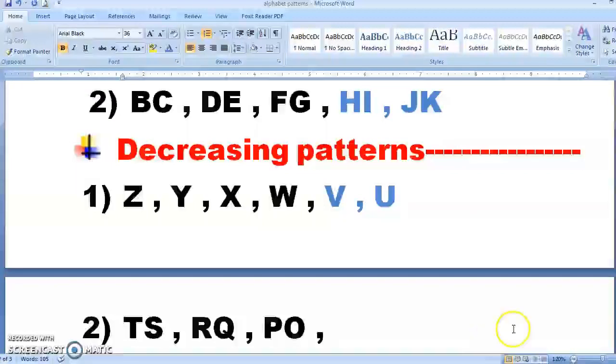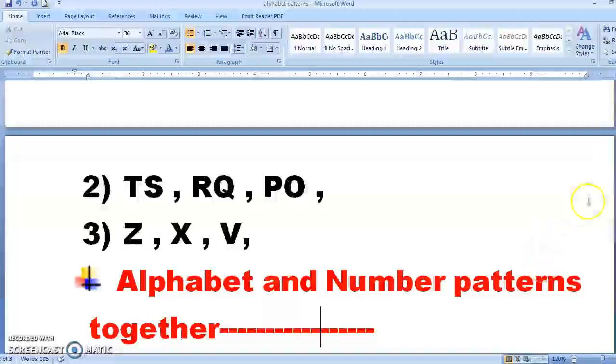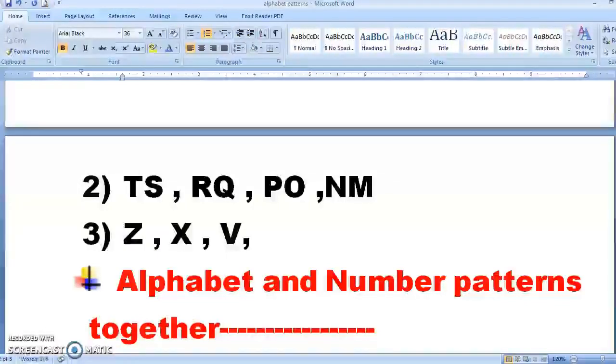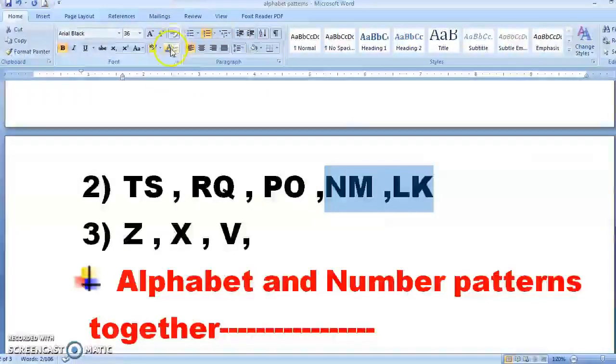Now let us take one more example. T, S, R, Q, P, O. So from T, it is going in upward direction. That means S, R, Q, P, O. Now it is going from T. What comes before T? S. Before S, R. Before R, Q. P, O. So they are written together. So before O, which alphabet comes? N. And before N, M. After that before M, L. And before L, K. So two alphabets are taken together in the decreasing order.